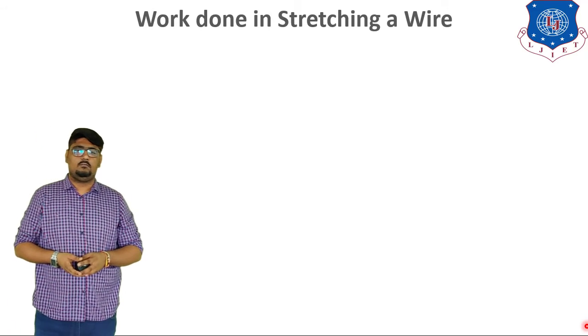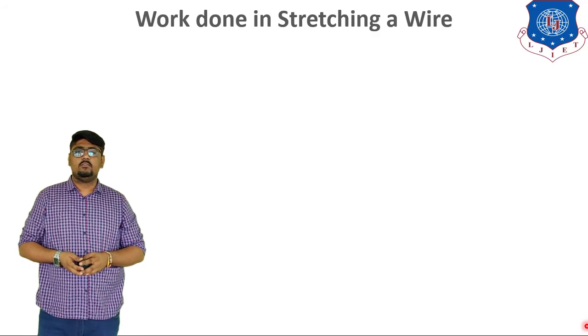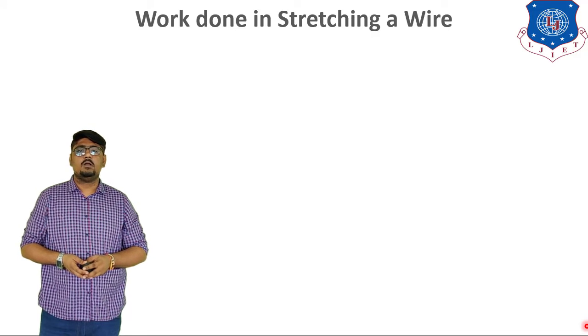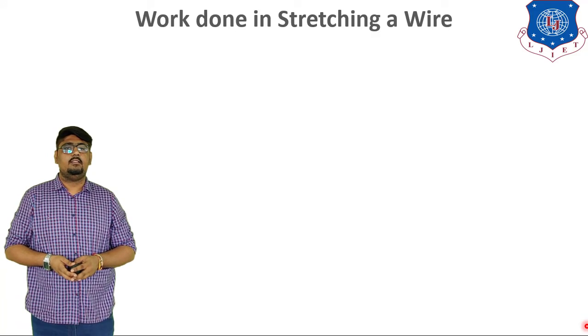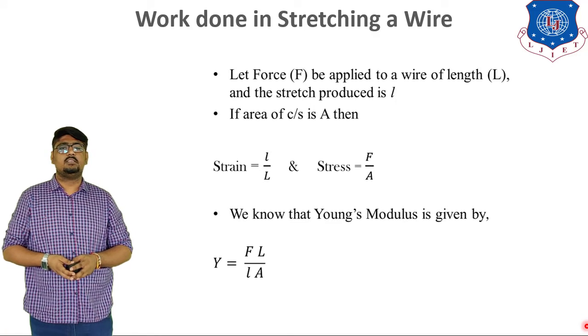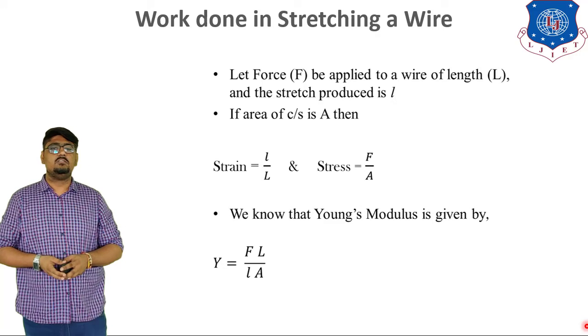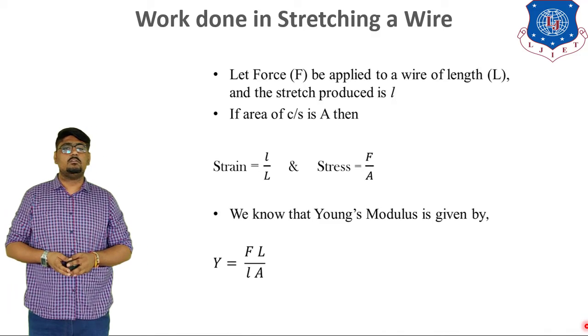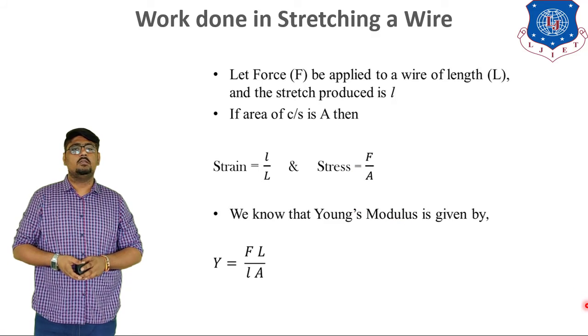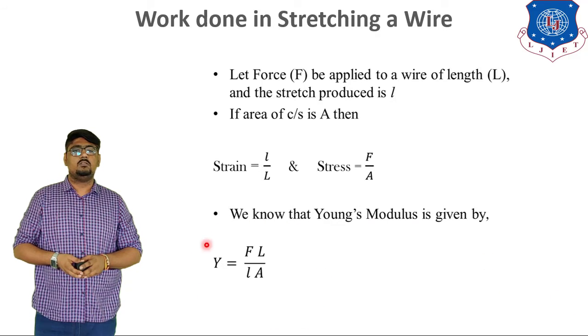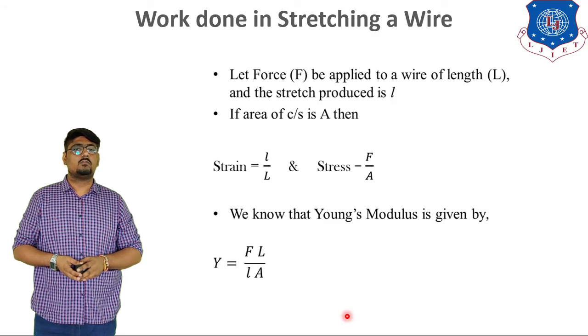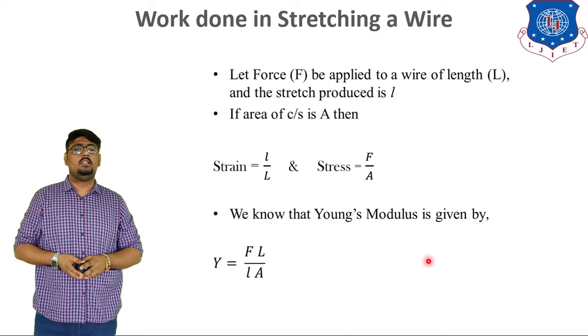Now, moving further. Next topic is work done in stretching a wire. Let force F be applied to a wire of length L, and stretch produced is small l. And if the cross-sectional area is capital A, then strain is given by change in length upon the original length. So, strain is equal to small l upon capital L. And stress is given as force upon A. So, we know that the Young's modulus can be given by longitudinal stress upon longitudinal strain, F into L upon small l by A.